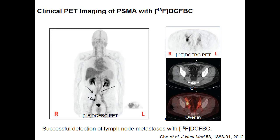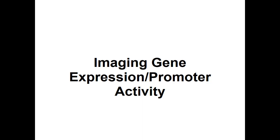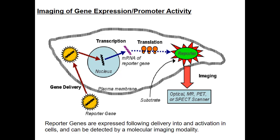PSMA imaging is also very good for detecting lymph node metastases from prostate cancer. As you can see here, this shows up very nicely and is very helpful in the clinic when you have a prostate cancer patient and want to see if he has metastatic nodules somewhere.